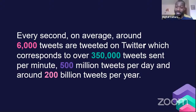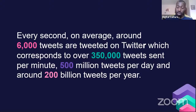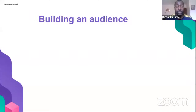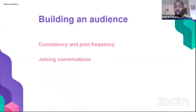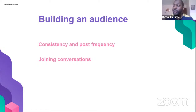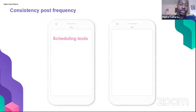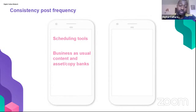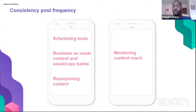There are about 6,000 tweets a second, so you're trying to get just a little bit of that attention. To build an audience, we'll look at consistency and post frequency, joining conversations, scheduling tools, business as usual content, asset and copy banks, repurposing content, and monitoring content reach and insights.